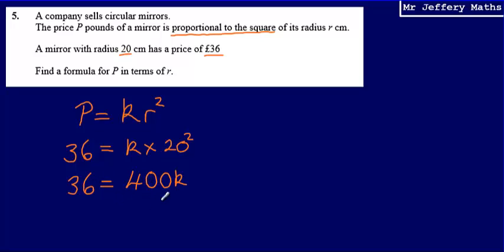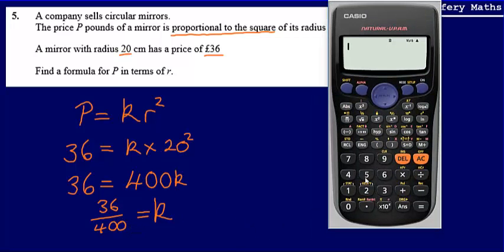All that's left for me to do is find out what this constant is. So what is our value for k? That's going to be 36 divided by 400, and working that out, we're going to say that that is 0.09.